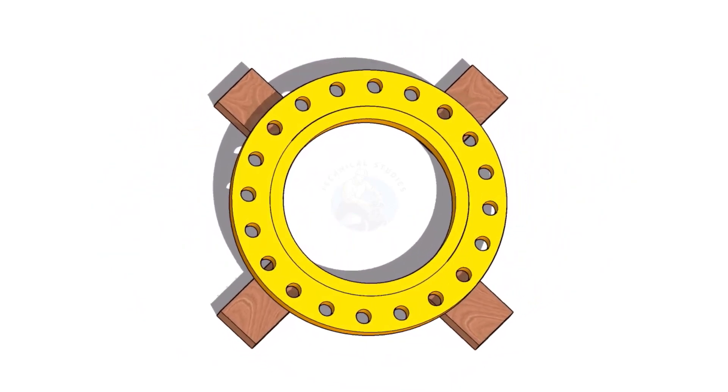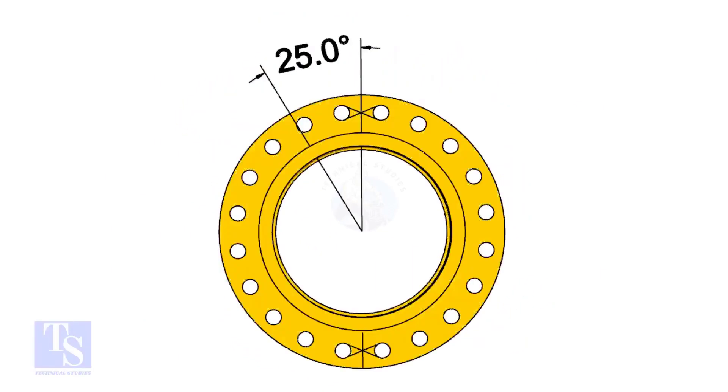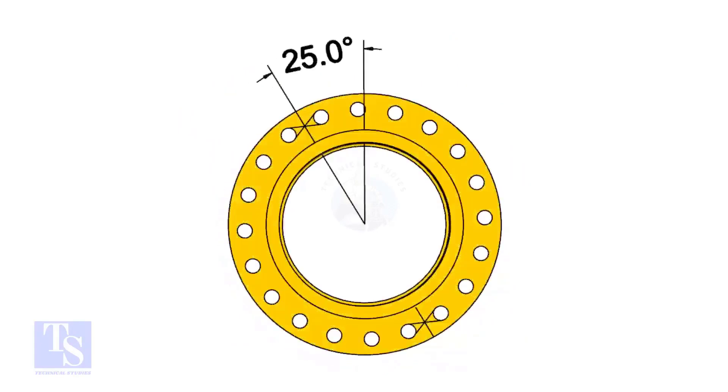The pipe and the flange size is 16 inch, and the flange will rotate 25 degrees anti-clockwise. Hope you all know the difference between clockwise and anti-clockwise rotation.